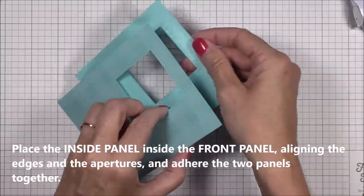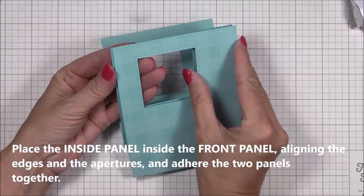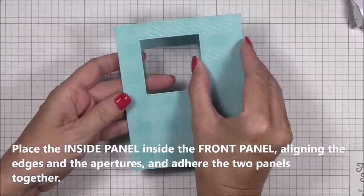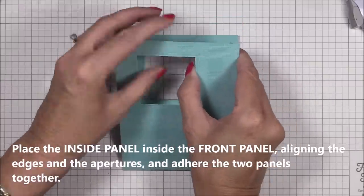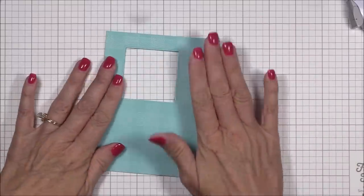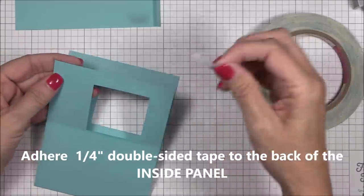Now I'm going to place the inside panel inside the front panel, again aligning all of the edges and the apertures of both panels, similar to how we did when we die cut the apertures. This is why I like using tape runner adhesive for this step instead of liquid adhesive. It's nice to have a little wiggle room before you seal everything up.